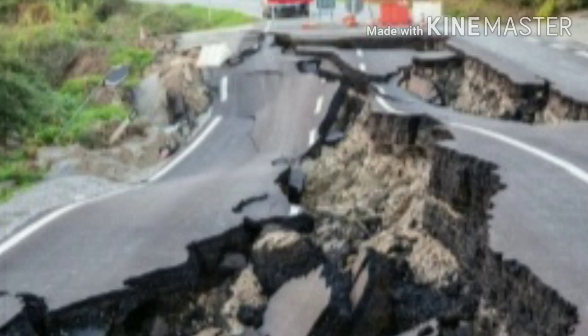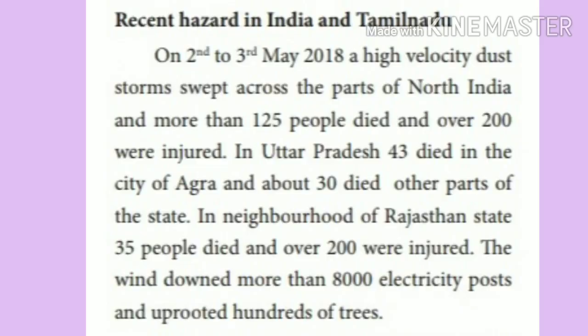Now we are going to see the recent hazards in India and Tamil Nadu. On 2nd to 3rd May 2018, a high velocity dust storm swept across parts of North India and more than 125 people died and over 200 were injured. In Uttar Pradesh, 43 died in the city of Agra and about 30 died in other parts of the state. In the neighboring Rajasthan state, 35 people died and over 200 were injured.